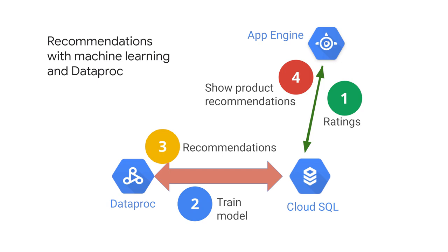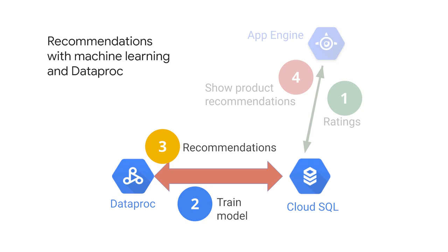Lastly, in step four, your ratings can be delivered back to users through App Engine. You won't do steps one and four in this lab because those steps deal mostly with web programming. In this lab, you concentrate on doing steps two and three. Try out the lab, and keep in mind that you have multiple attempts for each lab and you can always come back and practice more.